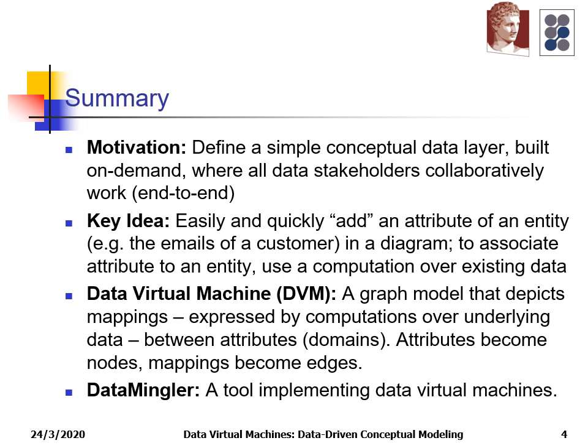The key idea is to easily and quickly add an attribute of an entity — for example, the emails of a customer — in a diagram, and to associate this attribute to the entity using a computation over existing data. That leads us to the concept of a data virtual machine, which is a graph-based model that depicts mappings between attributes. A mapping is a computation over underlying data.